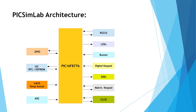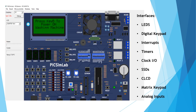The PIC-SimLab architecture consists of a PIC16F877A microcontroller with RS-232, LEDs, buzzer, digital keypad, SSDs, matrix keypad, CLCD, analog-to-digital converter, temperature sensor, I2C, RTC, EEPROM, and GPIOs. The PIC-SimLab PIC-Genius board displays LED arrays D1 to D7 and B1 to B7, digital keypad connected to RB0, RB1, RB2, RB4, RB5, interrupts, timers, EEPROM, a 16x2 or 16x4 LCD display, a buzzer, USB port, power supply, and more.